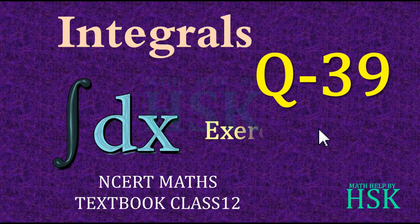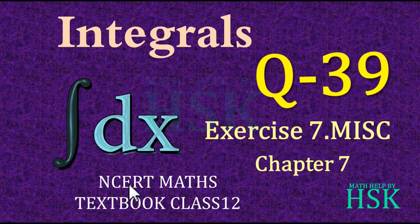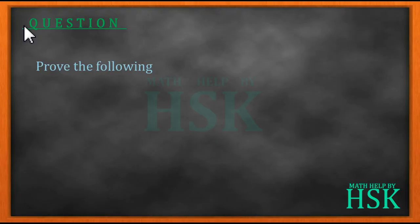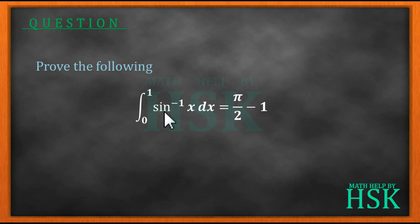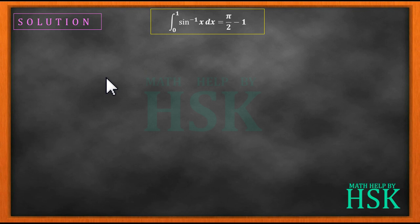Hello friends, in this video we are going to take question number 39 of the miscellaneous exercise of chapter 7 of the NCERT maths textbook class 12. The question asks us to prove that the integration of sine inverse x dx from the limit 0 to 1 is equal to pi by 2 minus 1.